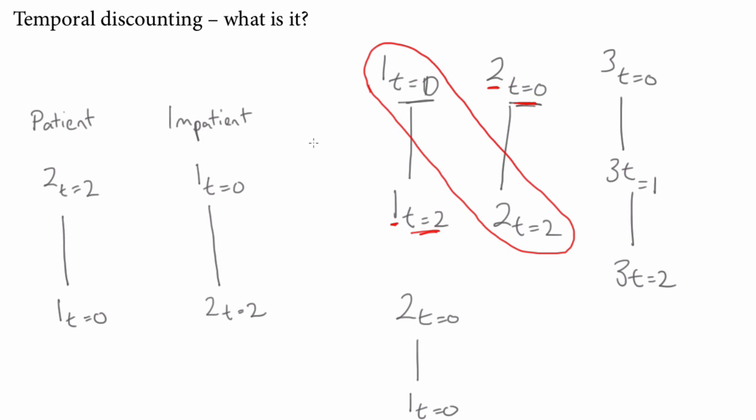What we're seeking when we try to do temporal discounting, or sort of develop the technique, is some way of representing mathematically the different psychological attitudes of these two different sorts of people, in a way so we can make predictions about what they would do in future.